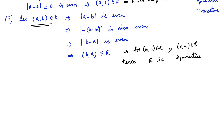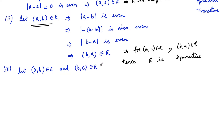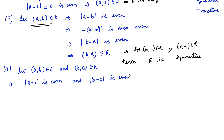Now let's prove it for transitive. Let (a, b) belong to R and (b, c) belong to R. Since (a, b) belongs to the relation, we can write |a - b| is even. And since (b, c) belongs to R, we can write |b - c| is also even.